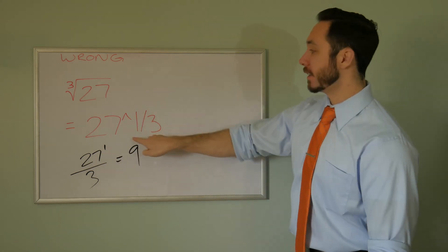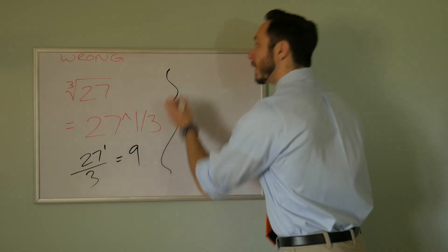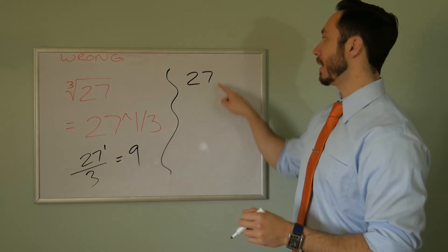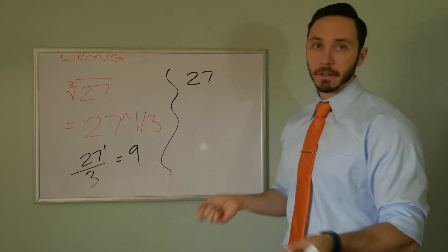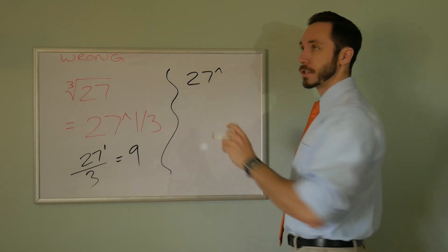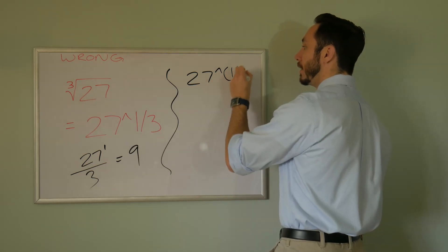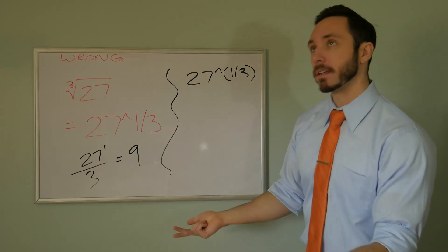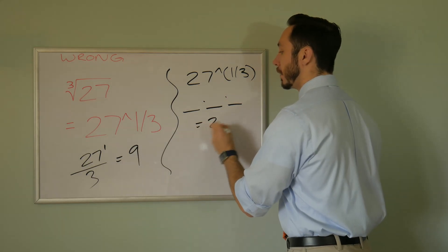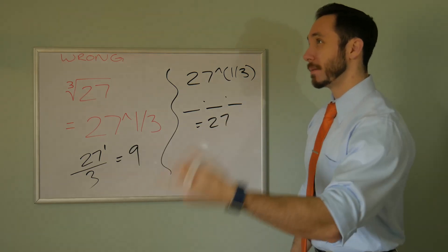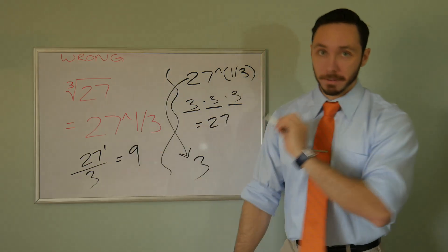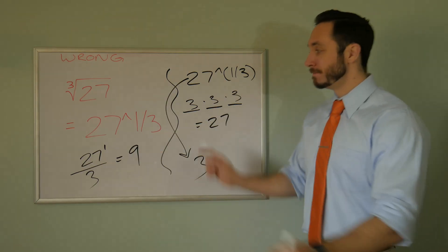They're trying to raise this whole thing to the one-third power. With that said, they should type 27 to the power of — which is shift six — then open parentheses, one divided by three, close parentheses. That way it will output the correct answer of three. Mentally: two times two times two is eight, three times three times three is 27, so the answer is just three. They typed it wrong in their calculator — it's a simple mistake with the exponent.